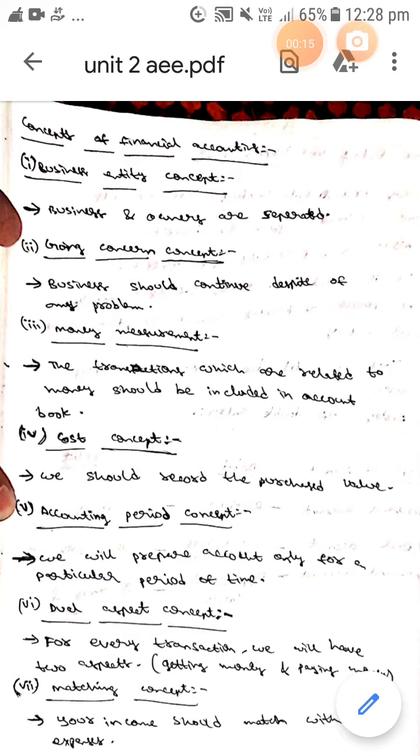Here business should continue despite any problem, whereas the third one is money measurement concept. Here the transactions which are related to money should be included in account book, whereas the fourth one is cost concept. Here we should record the purchased value.